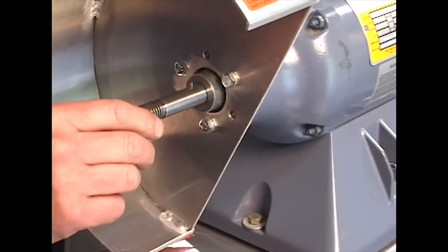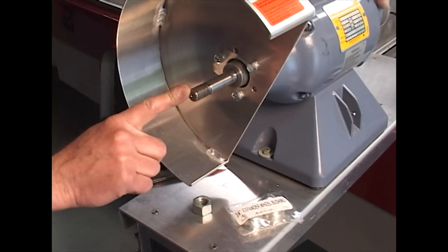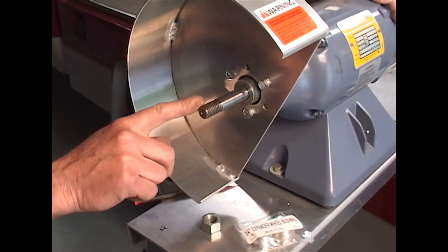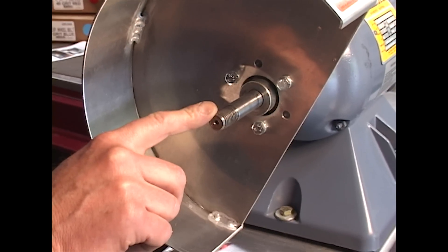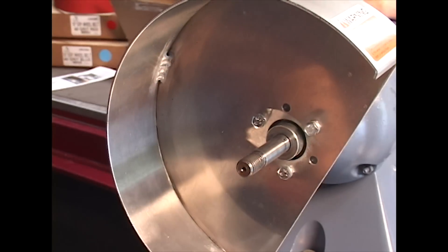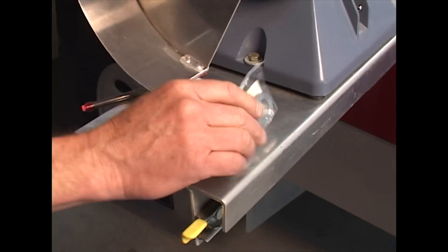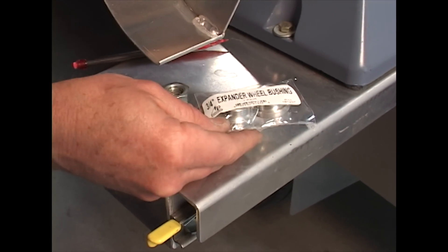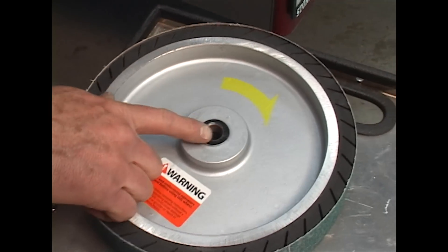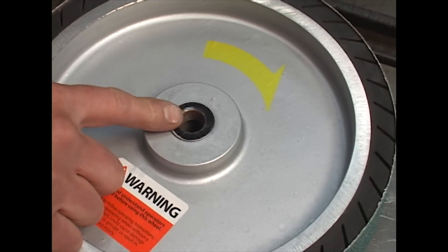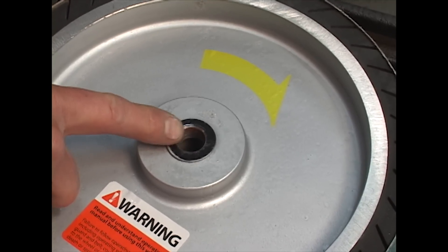There are some grinders that have different shaft diameters. This is a 5/8 inch shaft diameter. If you have a half inch shaft or a three-quarter inch shaft, we supply different diameter bushings that you can obtain from your supplier and exchange the bushings that come on the expander wheel. The expander wheel comes with a standard 5/8 inch bushing.